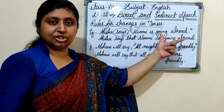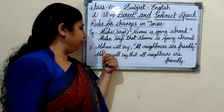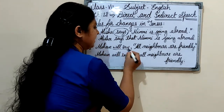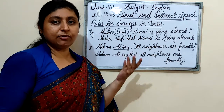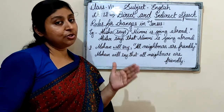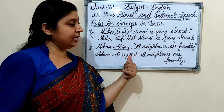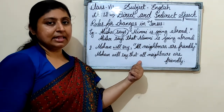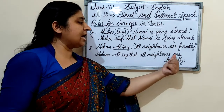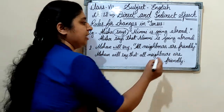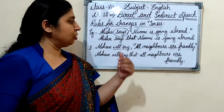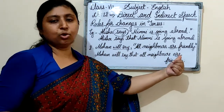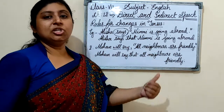Next example: 'Mohan will say, all neighbors are friendly.' The reporting verb here is 'will say,' which is in simple future tense. As per the rule, if the reporting verb is in present or future tense, no changes come in the tenses. So it becomes: 'Mohan will say that all neighbors are friendly' — no tense change.